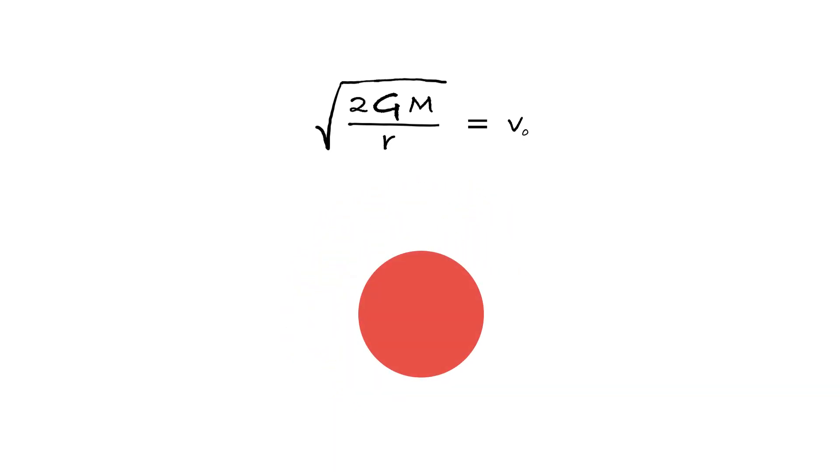And technically, as long as we can keep compressing the matter further and further, we can make the value of V0 as high as we want. Which means that, at a certain point, it will be higher than the speed of light. And if we assume that the light particles are subject to gravity, then this means that light cannot escape the surface of such objects.